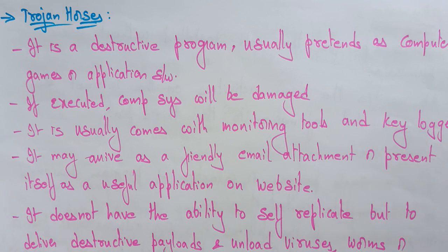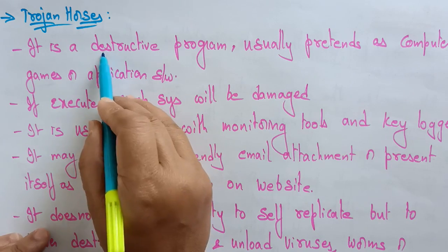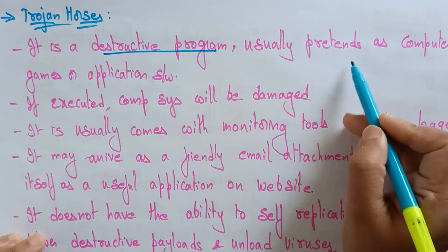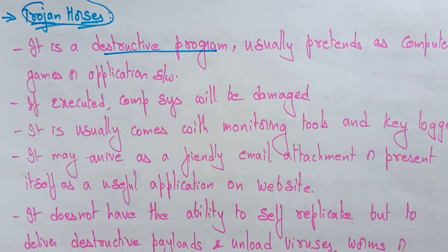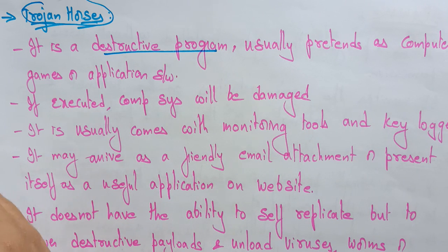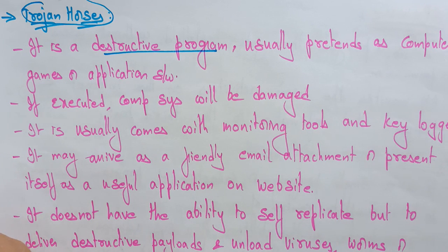The next one is Trojan horses. A Trojan horse is a destructive program that usually pretends to be a computer game or application software. Suppose you are working on something and suddenly a window appears saying it's a useful game or application. If you try to install it, it is going to destruct your computer, steal your data, and destroy your programs.